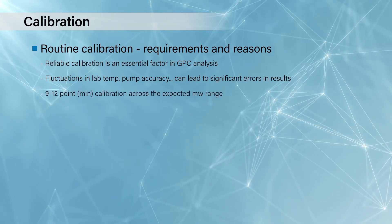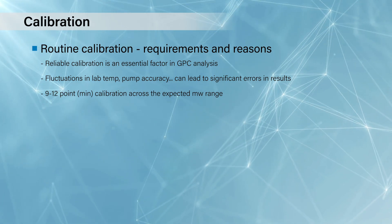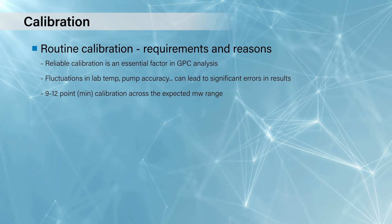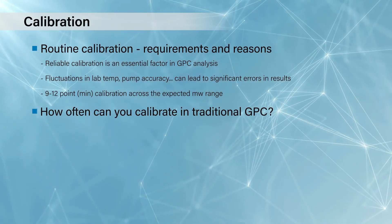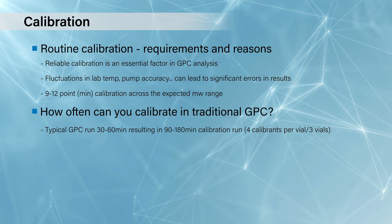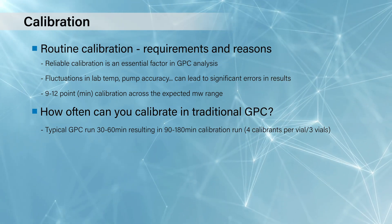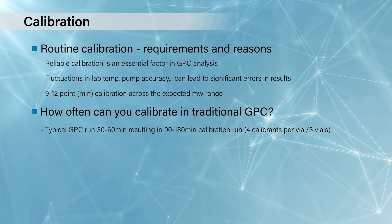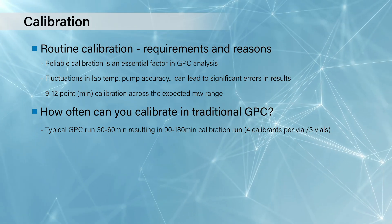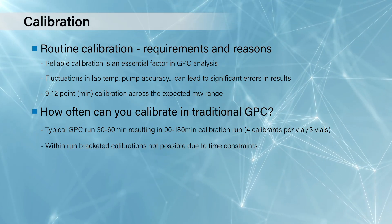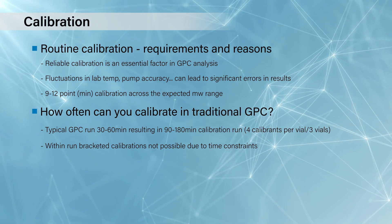We traditionally look for between nine and 12 point calibration as a minimum across the expected molecular weight range of your intended analyte. How often do you do it? It's always an interesting question to ask users — it's never as frequent as maybe they would like, due to the time taken to actually calibrate the system. If you think about traditional GPC runtime, it's between 30 and 60 minutes. If you have sets of calibrants with normally four per vial — the optimal situation — that's still three vials, so you can be looking at a few hours to perform a calibration. People don't tend to run bracketed calibrations or regular calibrations due to these time constraints.